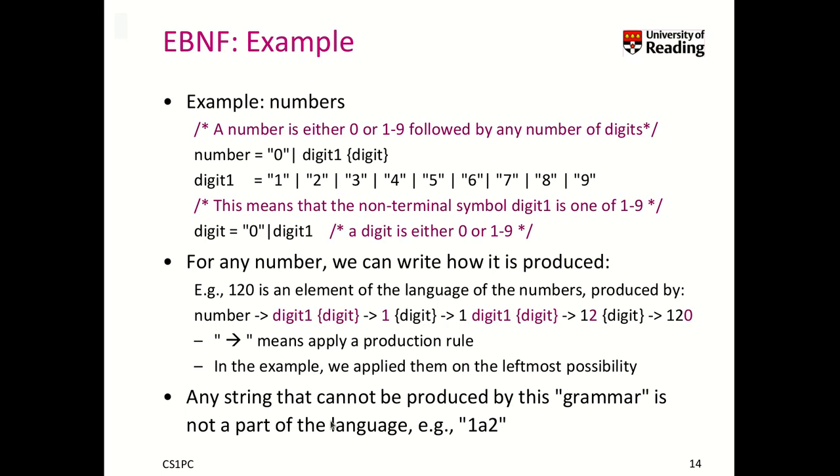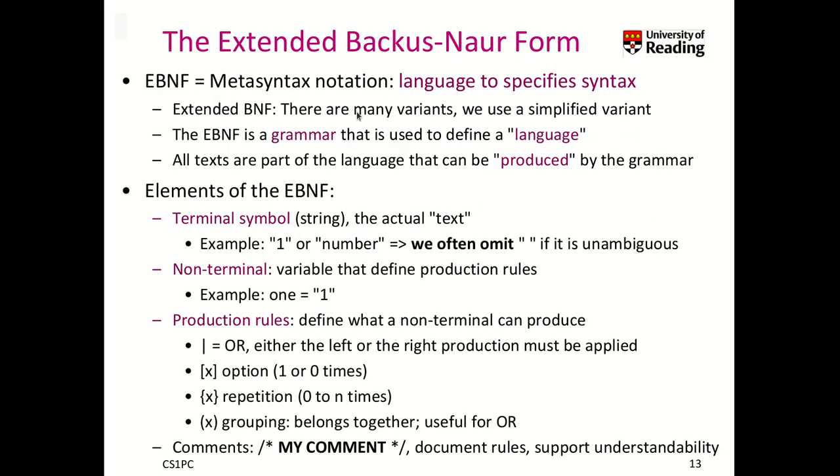So you can think of strings that cannot be produced by this grammar, or by our EBNF formulation, and these are not part of the language. For example, the string 1A2, this is clearly not a number, and our three rules here, they won't recognize it. So what we've seen is that with the EBNF, we can basically specify valid languages that we like make sense. The EBNF is a way to specify syntax.